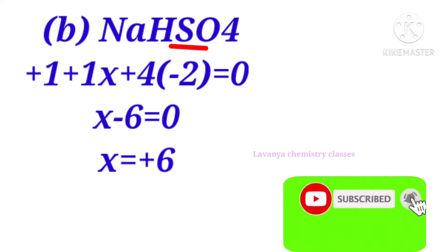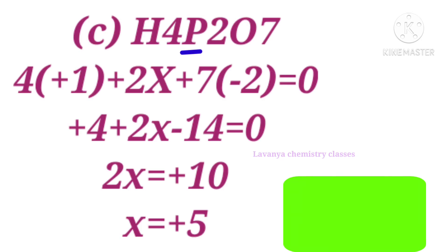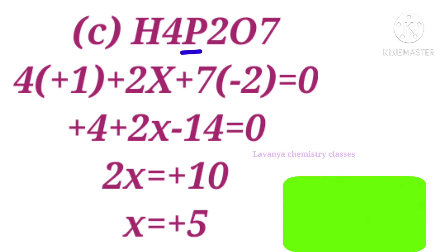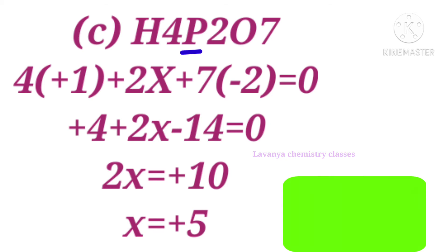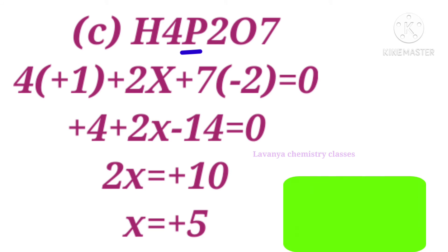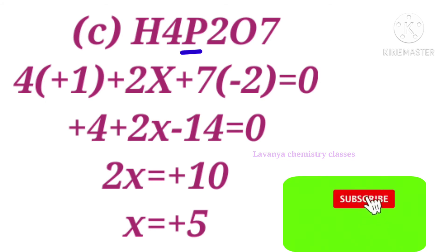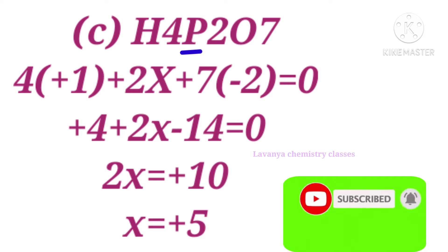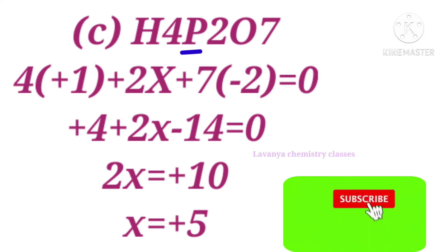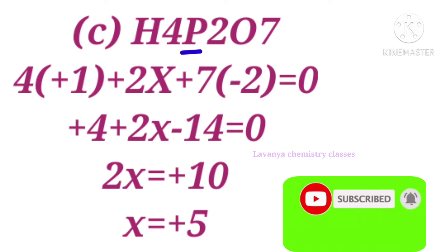The next problem is H₄P₂O₇. We have to find the oxidation number of phosphorus. Let phosphorus be x. There are 4 hydrogens, each +1, so 4×(+1). There are 2 phosphorus atoms: 2x. There are 7 oxygen atoms, each −2: 7×(−2). So: 4 + 2x − 14 = 0, giving 2x = 10, so x = +5. The oxidation number of phosphorus is +5.